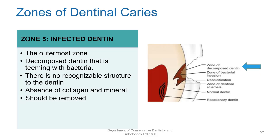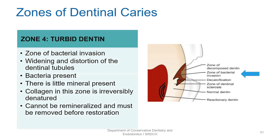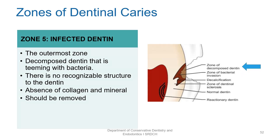The topmost zone is the zone of decomposed dentin or infected dentin. This is teeming with bacteria and there is no recognizable structure to the dentin. There is no collagen or mineral which can be dissolved. So, zone 4 and zone 5 dentins must be removed because there is irreversible denaturation of collagen and bacteria are present.